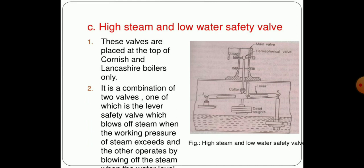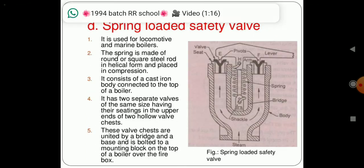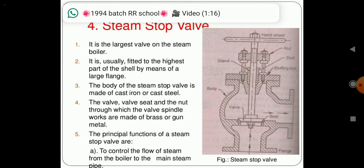The third type of safety valve is high steam and low water safety valve. In this type, it is placed at the top of the container. It is a combination of two valves, one of which is a lever safety valve and the second one is a blow off valve. The valve is made up of brass or gun metal. The principal function of this valve is to control the flow of steam from the boiler.